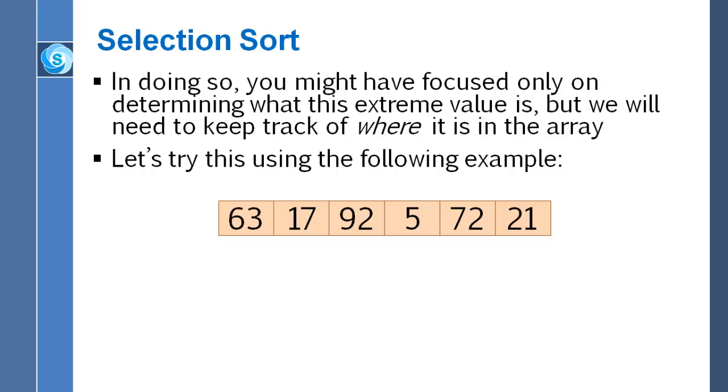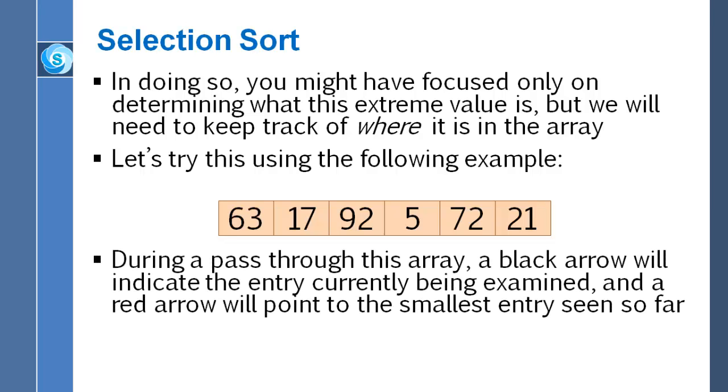First let me do it by means of this diagrammatic example using some arrows. I'm taking the same array that we used as an example for bubble sort, but now I'm going to use the selection sort strategy. I'm going to use a black arrow to show which entry we're currently examining, and a red arrow to point to the entry that is the smallest entry seen so far.